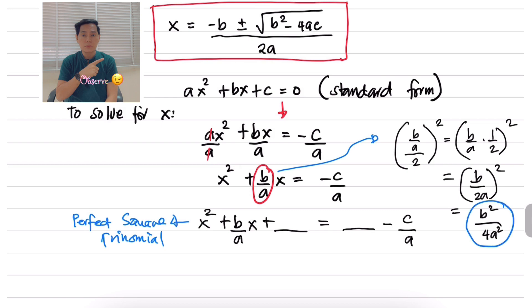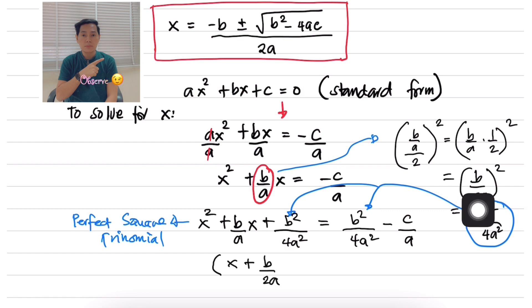We are going to place this as our third term on both sides of the equation, to make it a perfect square trinomial and to keep it balanced. So we are putting it on both sides of the equation, and this becomes x plus b over 2a, then squared — that's a perfect square trinomial already.